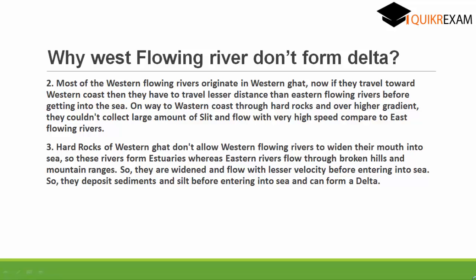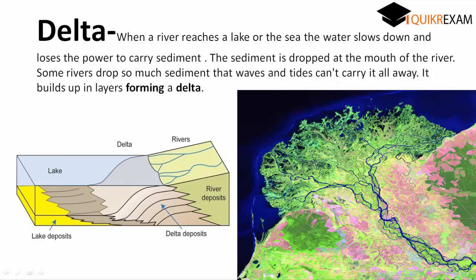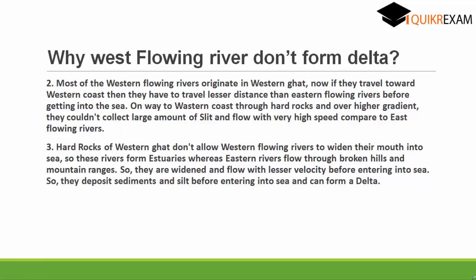Another reason is that the Western Ghats are formed of hard rocks. Hard rocks don't allow the rivers to widen their mouth, which is necessary to form a Delta. As seen in the previous picture, a river forming a Delta widens its mouth at the joining point of sea and river. But due to hard rocks, the rivers cannot widen their mouth.